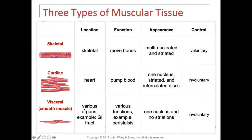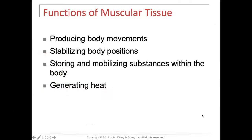Visceral muscle surrounds our organs — blood vessels, arteries, the trachea, and the colon. In the GI tract, it's involved with peristalsis, which is the peristaltic contractions that move food from the esophagus into the stomach and through the small and large intestine. It is smooth muscle contraction that pushes the food along. Cardiac and visceral muscle are both involuntary.